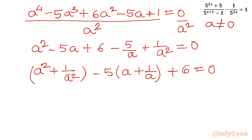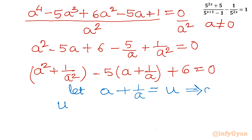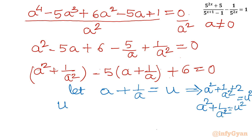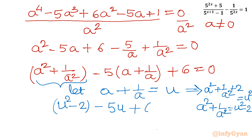Now it is substitution time. Let u equal to a plus 1 over a. Squaring both sides: u squared equals a squared plus 2 plus 1 over a squared, so a squared plus 1 over a squared equals u squared minus 2. Substituting in our equation: u squared minus 2, minus 5u, plus 6, equal to 0.